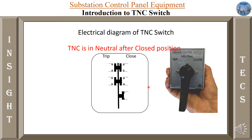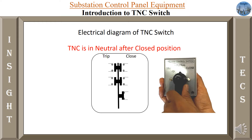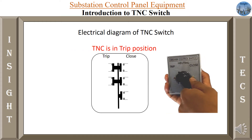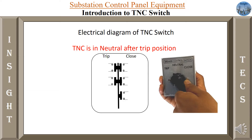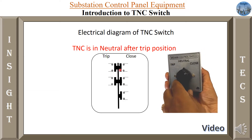Now let us understand what happens when we move the switch towards the trip position. As we move towards the trip side, the contacts move towards trip position. This NO now becomes NC — it is closed. But observe that the auto-reclose contact is now open when we have moved the switch towards the trip position. When we bring the switch back to neutral, the contacts are again normally open, and this auto-reclose contact also remains NO.